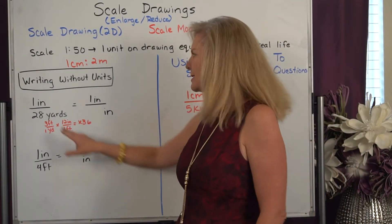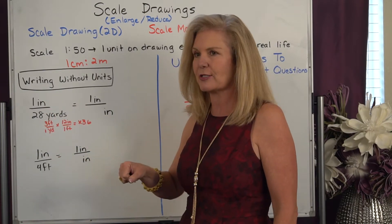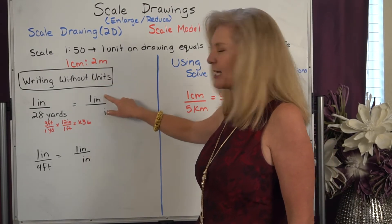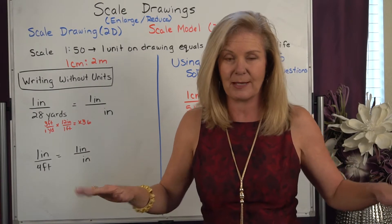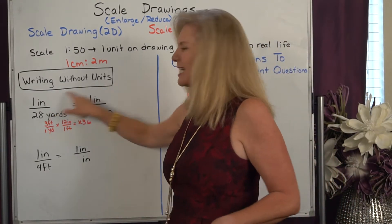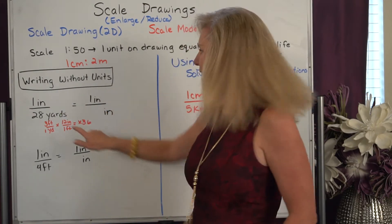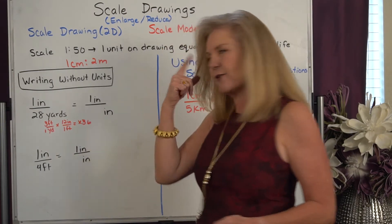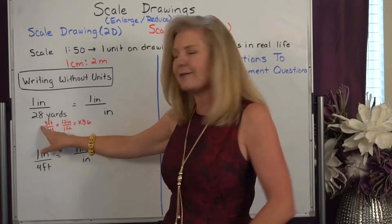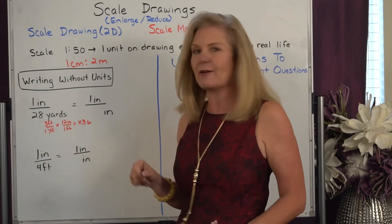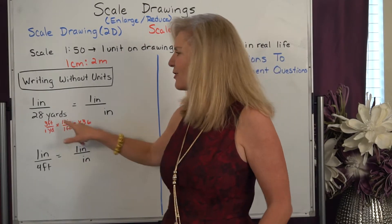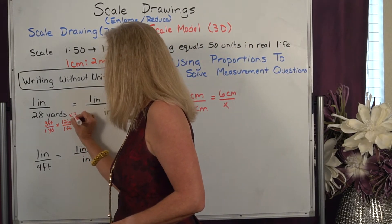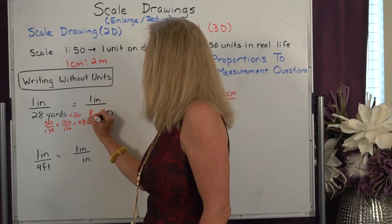If I had one inch is to 28 yards, I can keep that as that ratio but if I want to write it without units I need to compare inches to inches. So I need to convert 28 yards into inches. I know there's three feet in every one yard and 12 inches in every one foot so that means for each yard there's 36 inches. I need to multiply 28 by 36 and when I do that I get 1008.